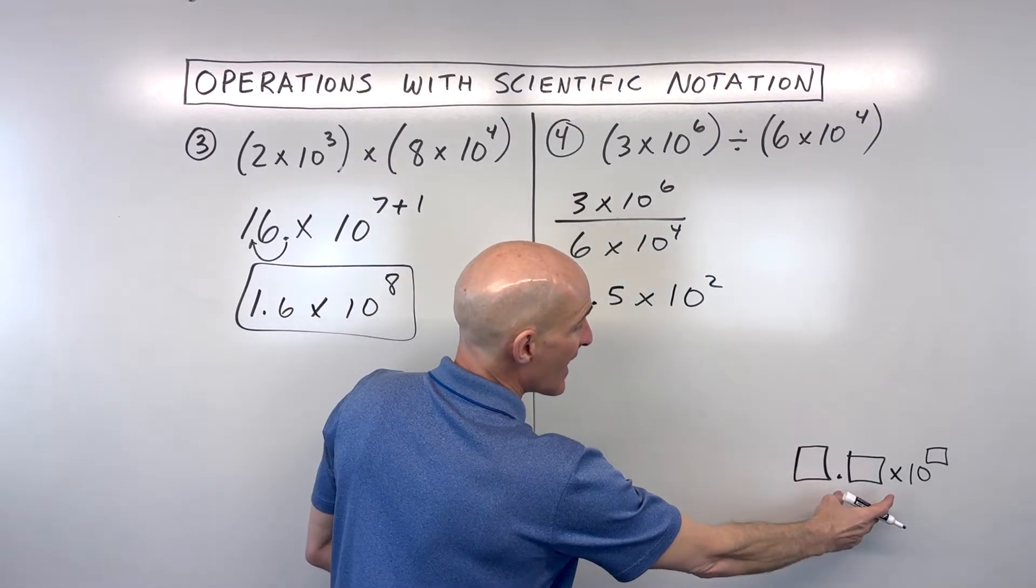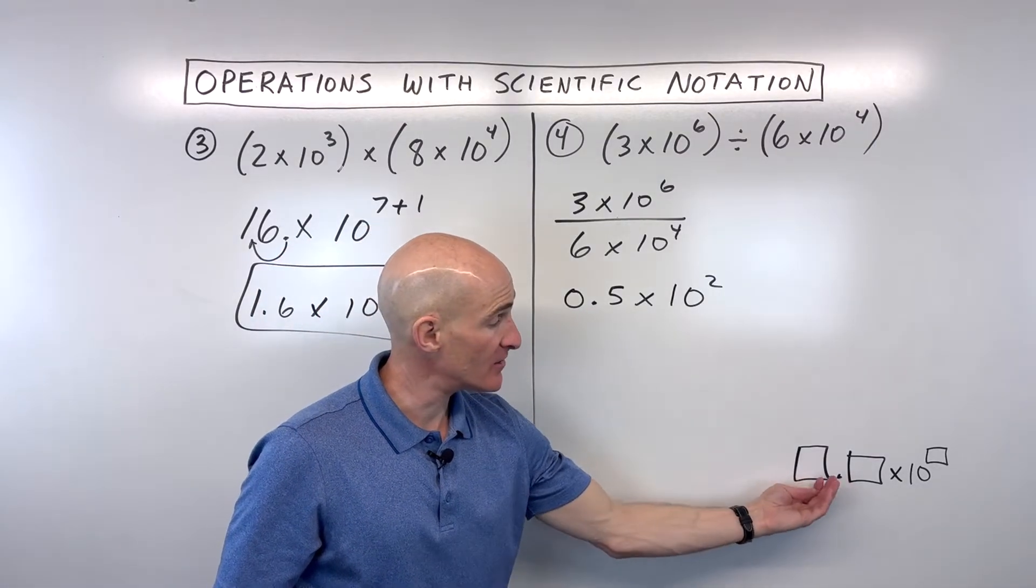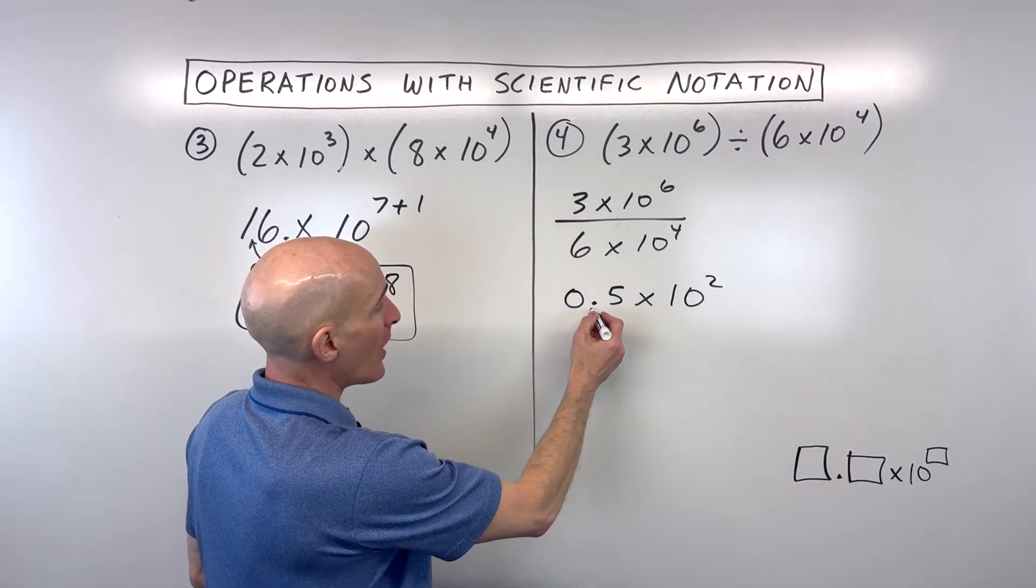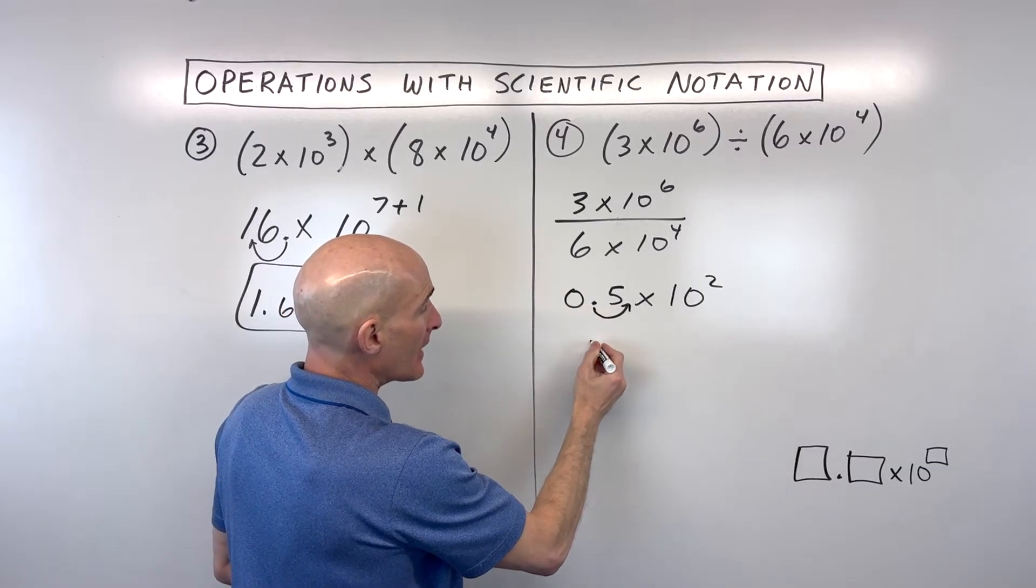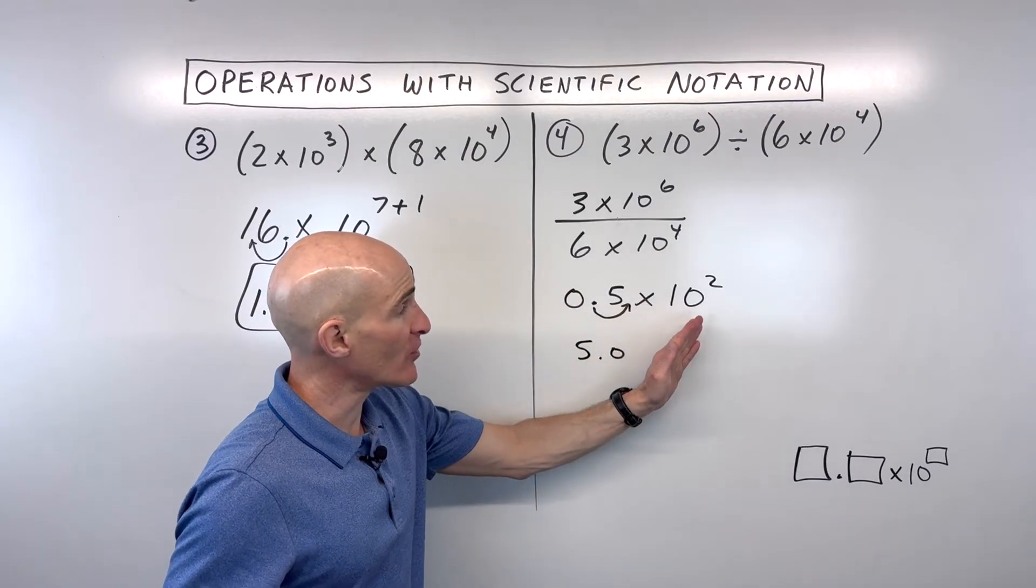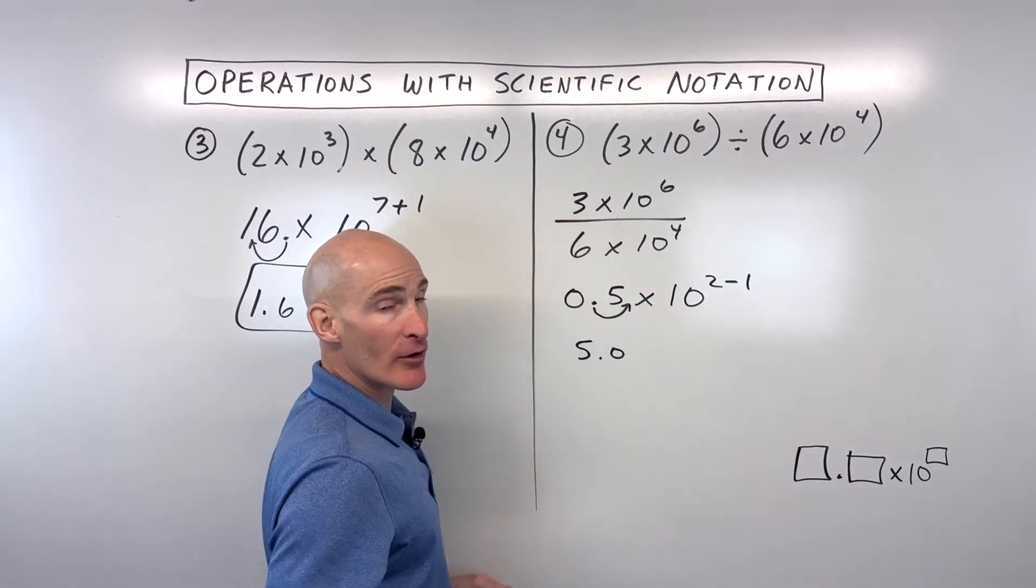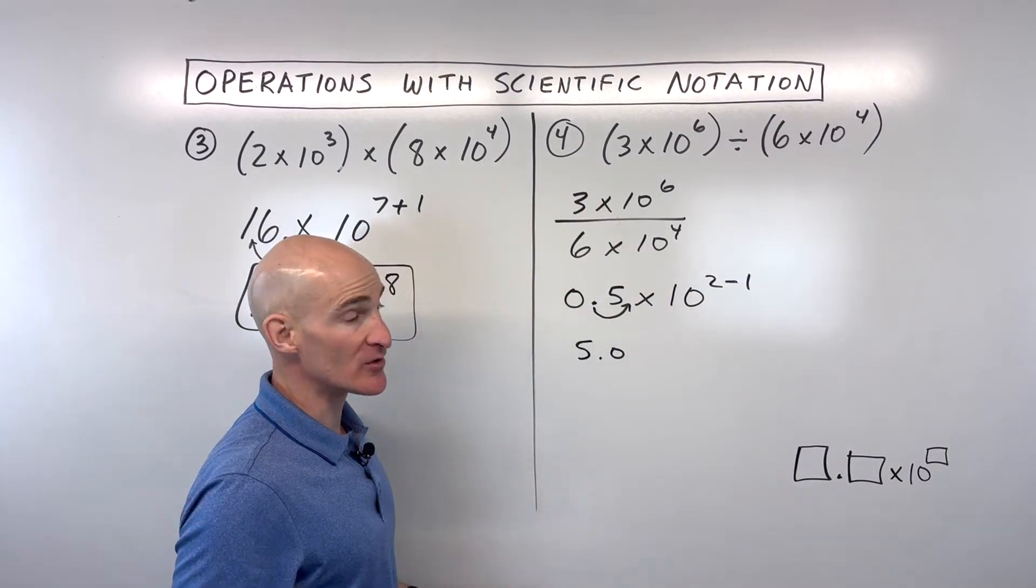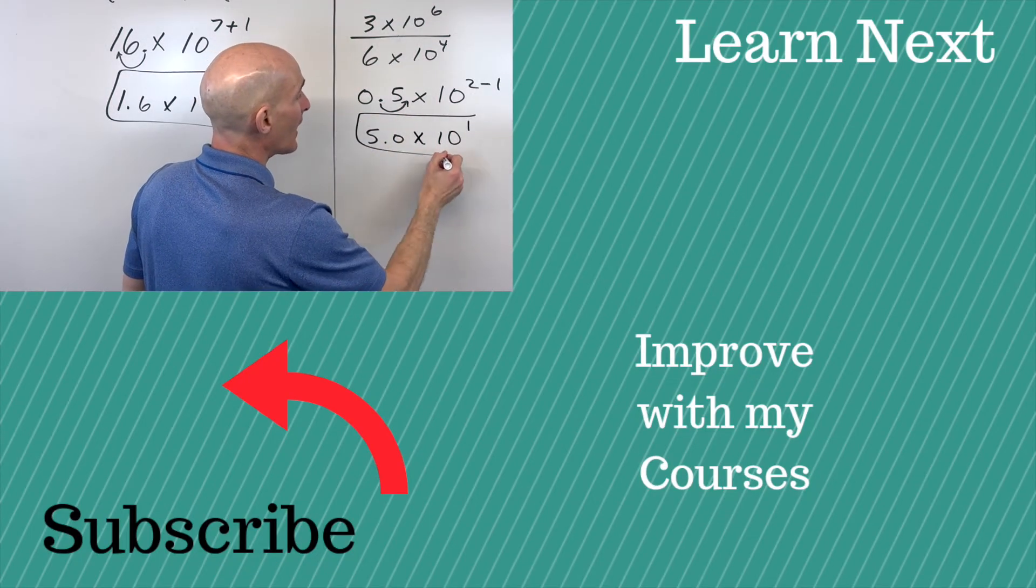But again, notice this is not in scientific notation. We want a single digit from 1 to 9 in front of the decimal point and the rest of the significant digits on the right. So I'm going to have to move this decimal point one place to the right, in effect making this number larger by a power of 10. Remember, when you move the decimal to the right, it's getting bigger. So to counterbalance that, I'm going to have to make this smaller by a power of 10. If I move this two places, I'd have to adjust this by two. So this comes out to 5 times 10 to the 1st, and we've got it.